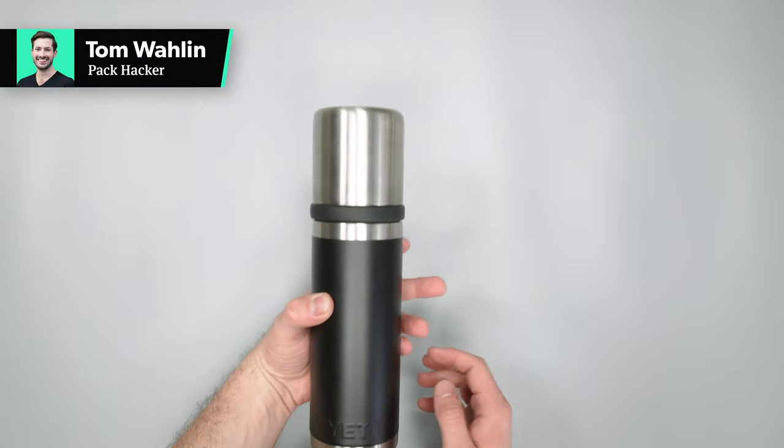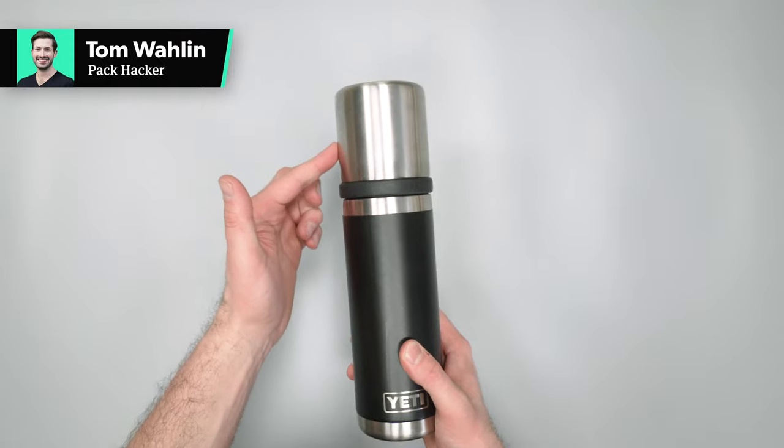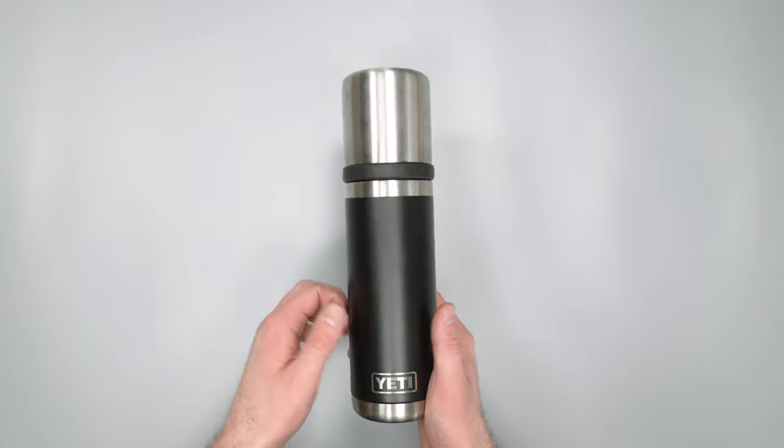In this video we're taking a look at the Yeti Rambler, the 18 ounce version, along with the 5 ounce cup cap on the top. Check out packhacker.com for more details, link down in the description below.